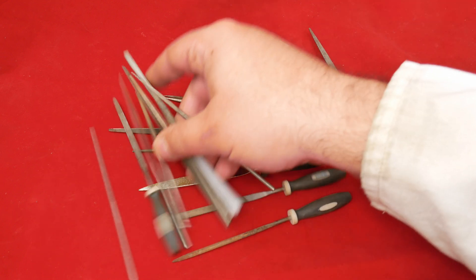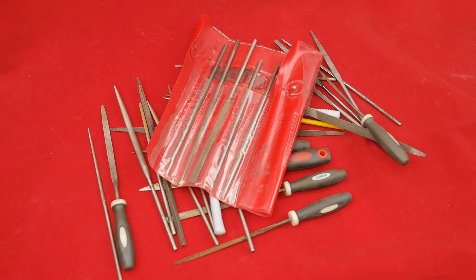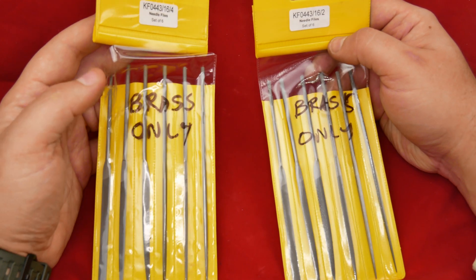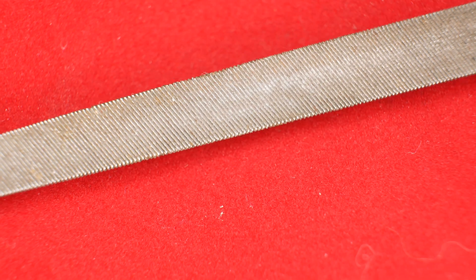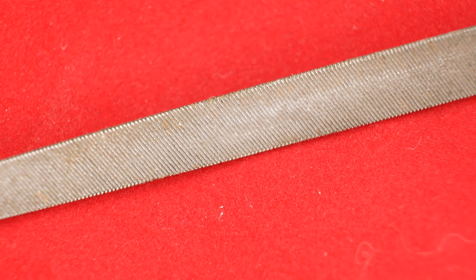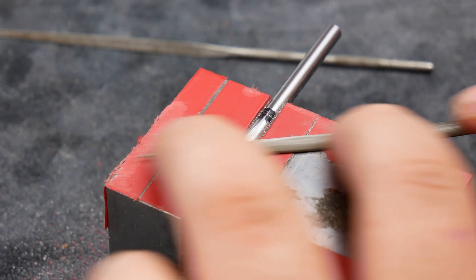This seemed like a good opportunity to test out a load of random files that I've got lying around. I've got some nice shiny new files, but I've been saving those for brass. I found that it can be pretty difficult to see how an old file will cut just by looking at it. But by the end of this, I had a pretty good idea of how these files handled, and I picked out a few favorites.